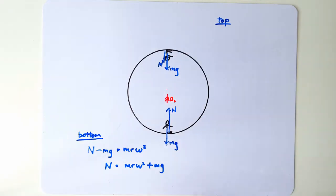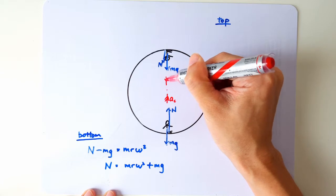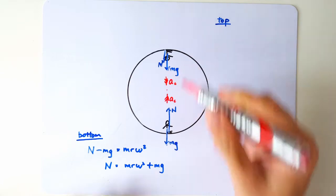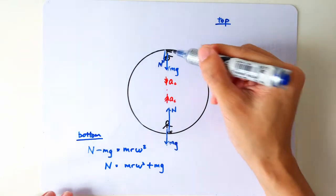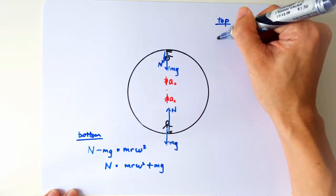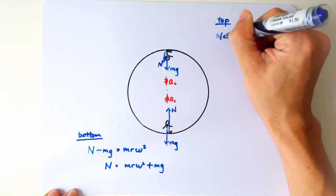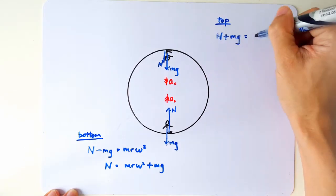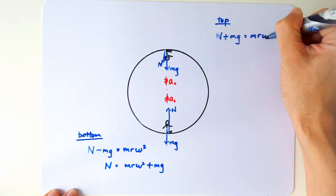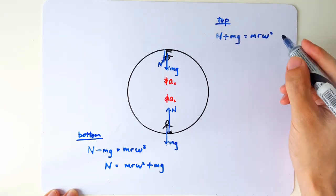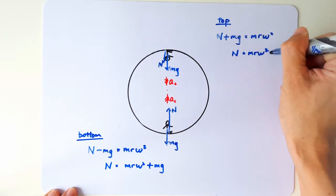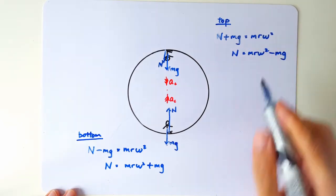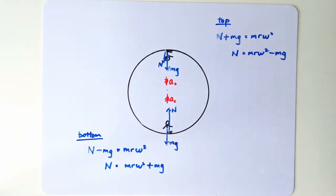But there's a crucial difference. When you're at the top, the centripetal direction is downward because the center of the circle is now below you. So when you are at the top, it is the normal contact force plus mg that equals the required centripetal force mrω². So when you're at the top, the normal contact force is mrω² - mg. There's a difference in the normal contact force.